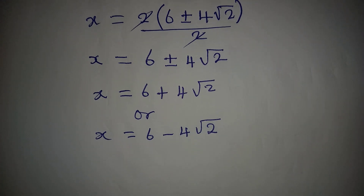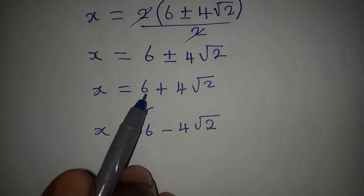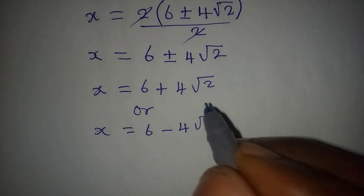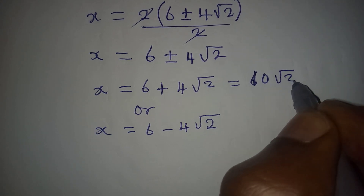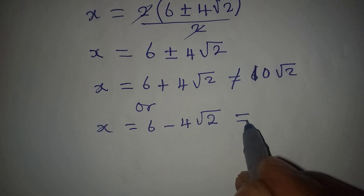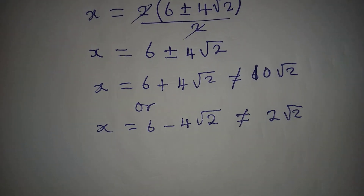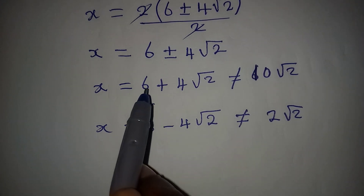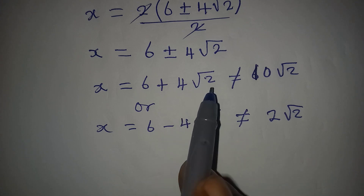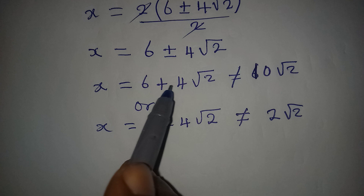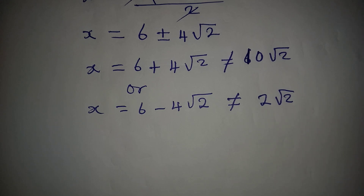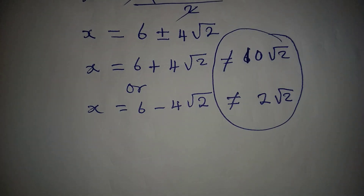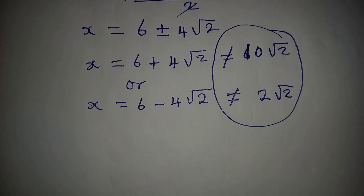Here is one mistake that some people would likely make. Because we have 6 and 4 on the outside, somebody might be tempted to combine them and write 10√2. Remember, 6 and 4√2 are not like terms and cannot be combined. Similarly, 6 + 4√2 is not the same as 2√2. Thank you for watching!